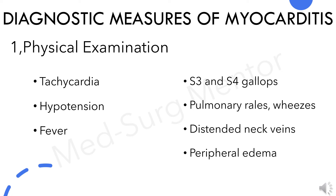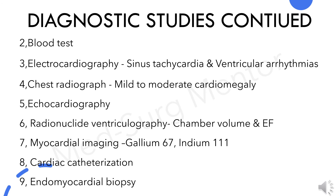For diagnostic measures, common physical examination findings in patients with myocarditis are tachycardia, hypotension, fever, S3 and S4 gallops, pulmonary rales, jugular distended neck veins, and peripheral edema.